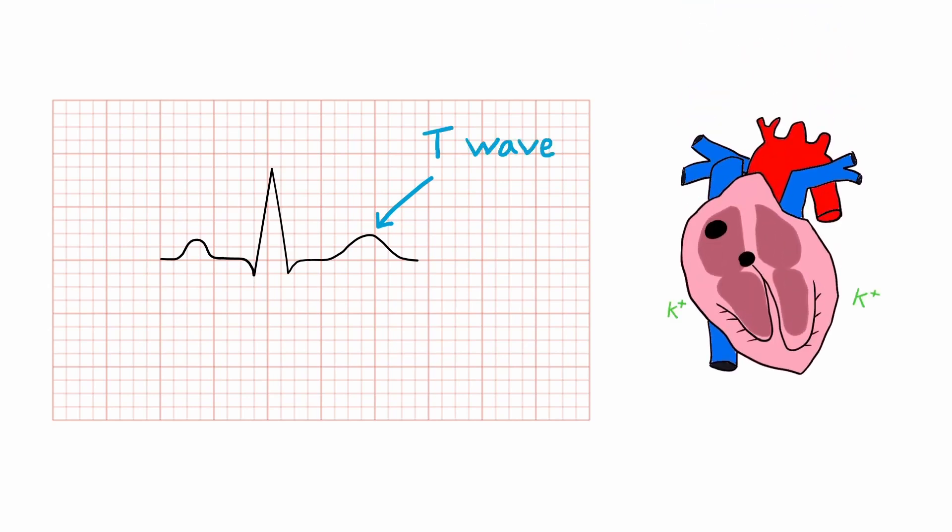Following ventricular depolarization we have the T wave which represents ventricular repolarization, where potassium moves back across the myocyte membrane to repolarize the cell back to minus 90 millivolts.